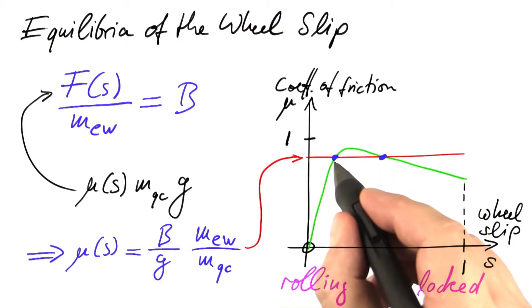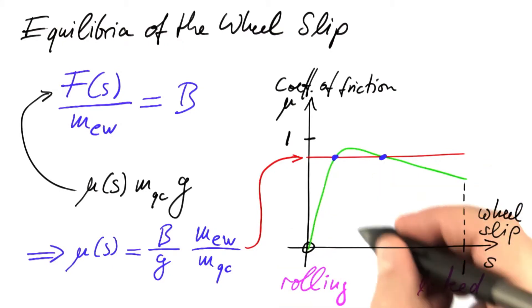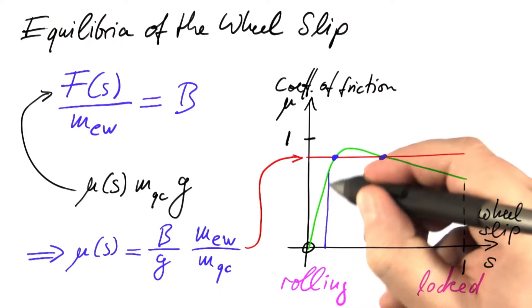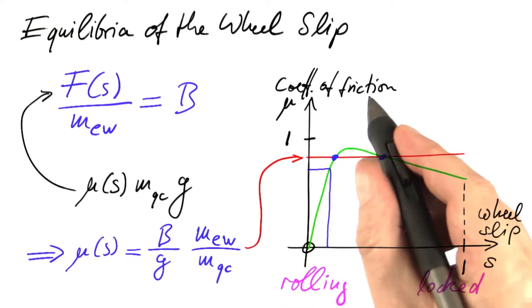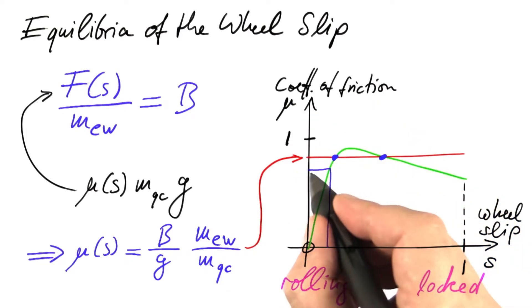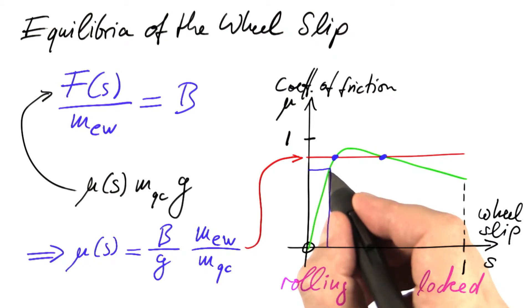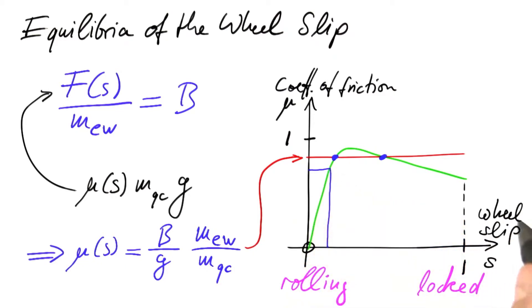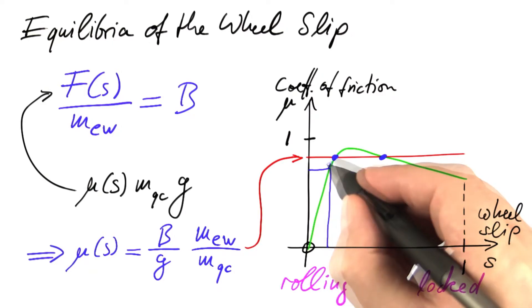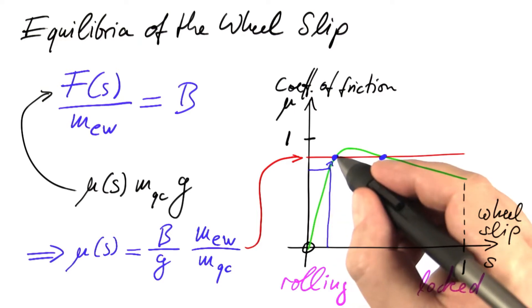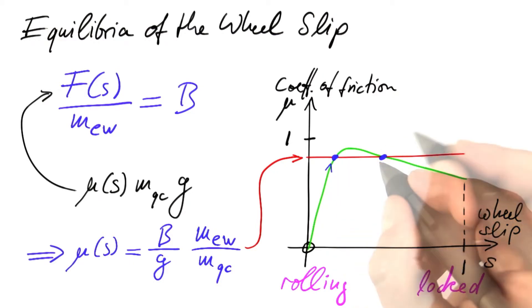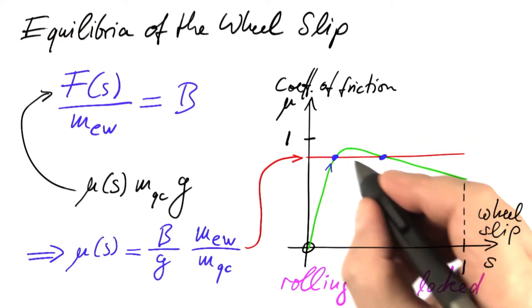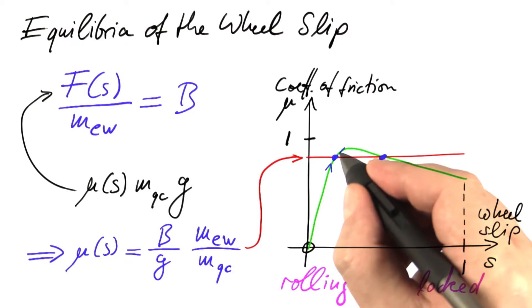I'll just illustrate one part of the argument for that. Imagine s was a little lower than the value of the equilibrium. Then we would have less friction because the coefficient of friction decreases. But if we have less friction, the brake acts stronger on the wheel, which means it's going to increase wheel slip. We are moving in that locking direction, which means upward. So from the left side, this equilibrium is stable. When we are slightly below this equilibrium point, we are moving up. And you can argue in a similar fashion that if we are slightly above that point, we are moving down.